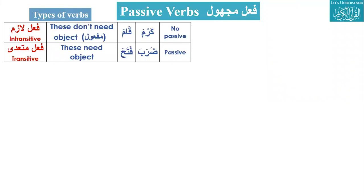Majhul is only made from a mutadi verb — mutadi means transitive. Transitive verbs need an object, so we can make a passive voice for them. If it is a lazim verb — intransitive — these don't have a maf'ul, so we also don't make passive voice.